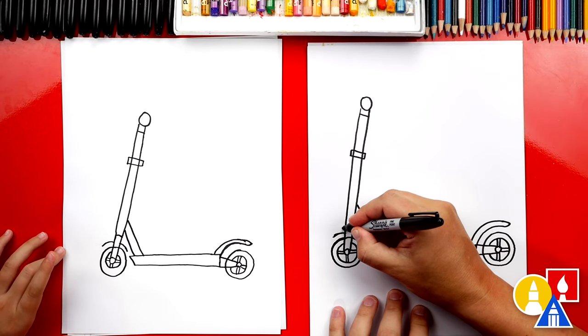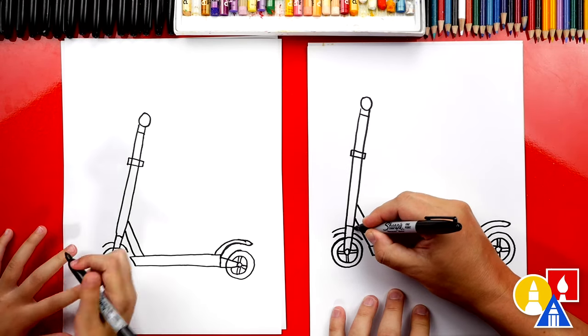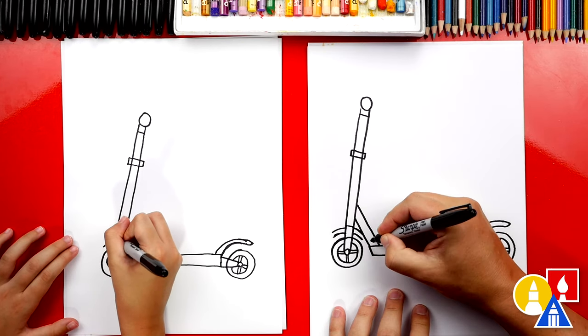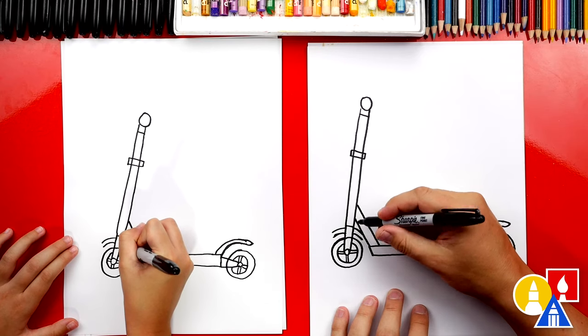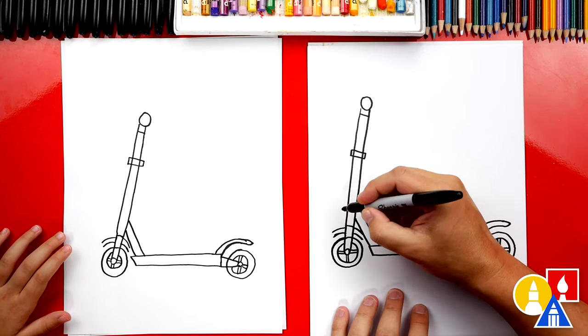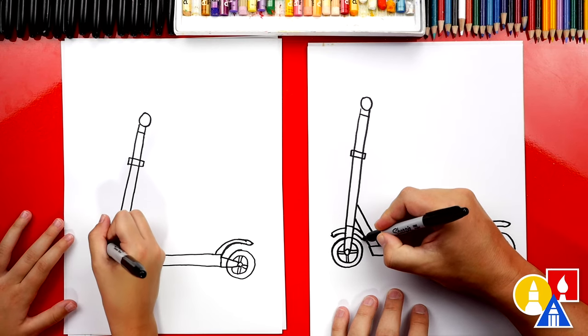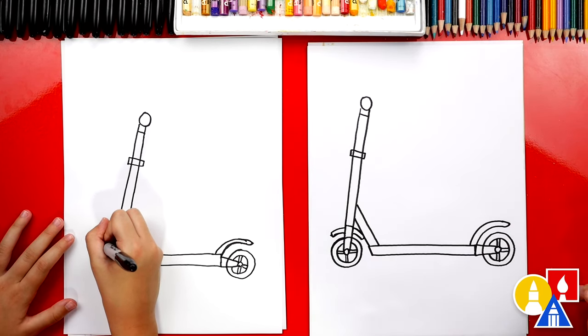Then we're gonna draw that same curve up above and on the front and also on the back. And I'm getting a little close to the brace but that's okay. Now we're gonna connect the bottom to the top or the top to the bottom.